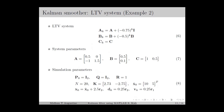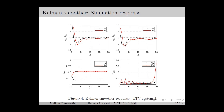Next, we consider the second example of the linear time-varying system, for which the system matrix, input matrix, and output matrix are chosen as in equations number 6 and 7, and the simulation parameters are chosen as in equation number 8. Figure 4 shows the simulation response of this linear time-varying system with the Kalman Smoother. We can observe that the matrix Lsk converges to some fixed matrices and the elements of Pk|N also converge, but there is a transient part in the beginning and also at the end because of the backward recursion.